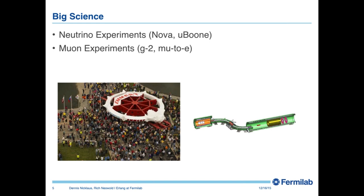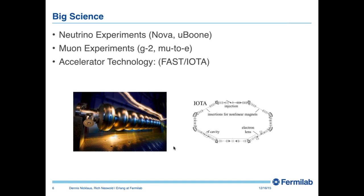We're also studying a particle type called the muon — sort of like electrons only heavier. We have two major muon experiments coming online in the next few years. The G-2 experiment involved moving a giant magnet from Brookhaven National Laboratory to here. Our other muon experiment is called Mu2E, for muon to electron conversion. We also do fundamental research in superconducting RF cavity technology and are building a new test ring called IOTA.